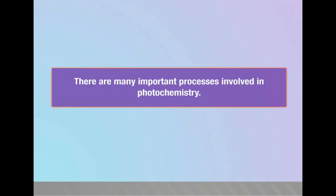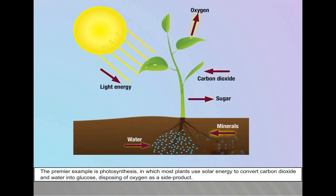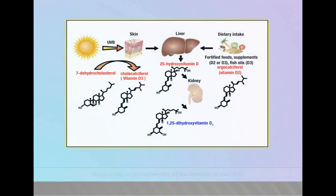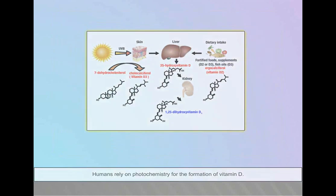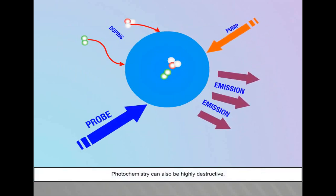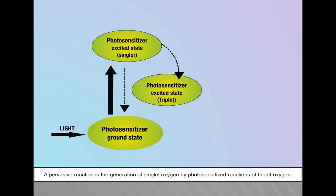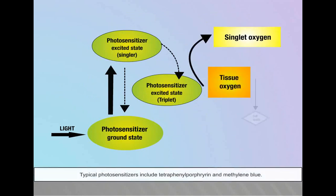Scientists in third-world countries who cannot afford to subscribe to referee journals often depend on the Spectrum as their primary source of current scientific information. Industrial sponsors of the Spectrum generously support publication and mailing expenses. There are many important processes involved in photochemistry. The premier example is photosynthesis, in which most plants use solar energy to convert carbon dioxide and water into glucose, disposing of oxygen as a side product. Humans rely on photochemistry for the formation of vitamin D.